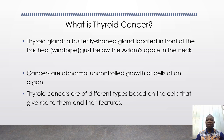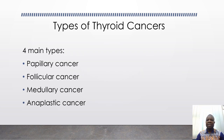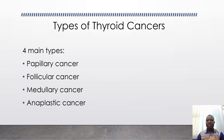Depending on the type of cell and the features of the tumor, we have different types of thyroid cancers. Generally, there are four main types of thyroid cancers: papillary cancer, follicular cancer, medullary cancer, and anaplastic cancer.